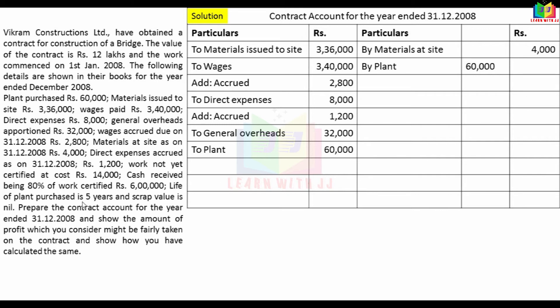If we calculate the depreciation: cost of the asset divided by estimated life. Estimated life is 5 years, scrap value is nil. So depreciation = Rs. 60,000 divided by 5 = Rs. 12,000. Therefore, plant value carried forward = Rs. 60,000 minus Rs. 12,000 = Rs. 48,000.